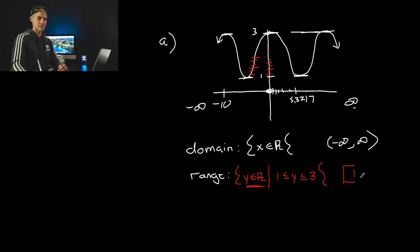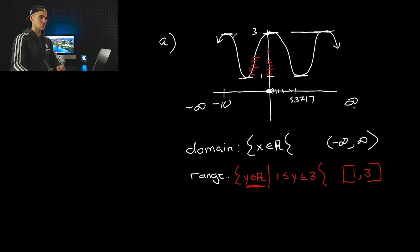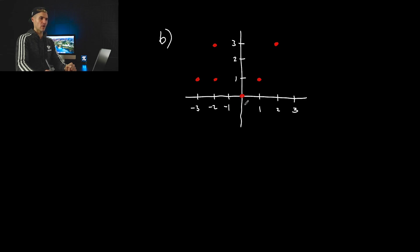In interval notation, because it's including both 1 and 3, we put square brackets, so it would be [1, 3]. When dealing with infinity symbols they always have circle brackets, but when including specific numbers you use square brackets. And is this a function? If we run a vertical line through the graph, there's no point where a single X value has multiple Y values, so this is indeed a function.